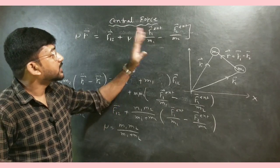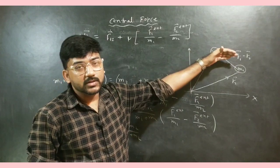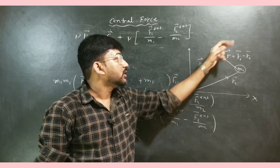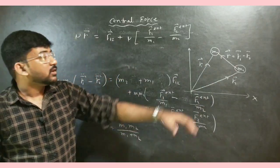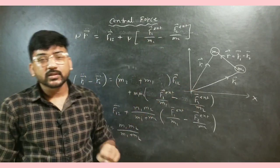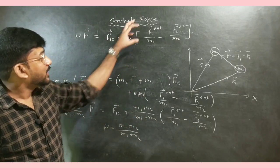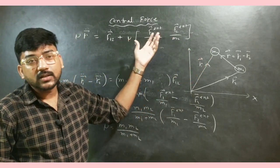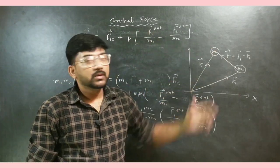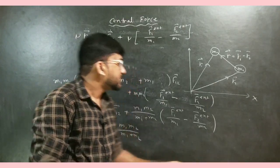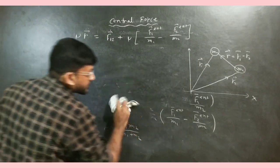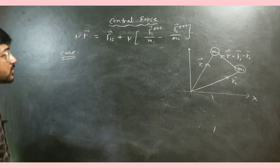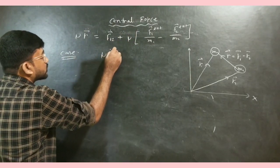The terms F1-external and F2-external are completely unknown and could arise from a third object — for example in the earth-moon system, the sun acts as a third object exerting forces on both M1 and M2. In Case 1, if we completely ignore F1-external and F2-external (a purely two-body system with no external forces), they become zero and our equation reduces to μ R-double-dot equals F12.